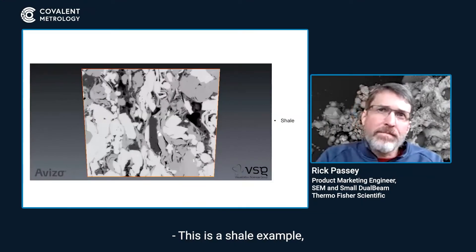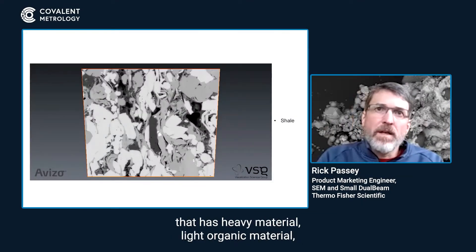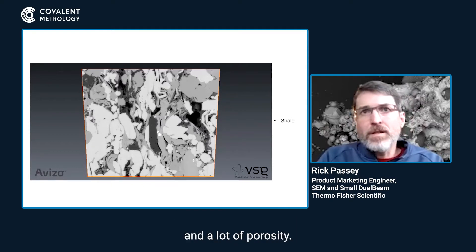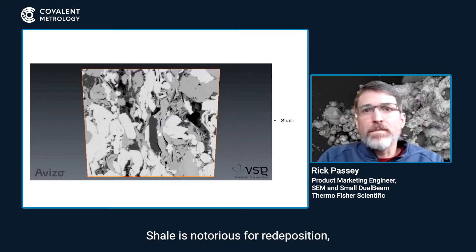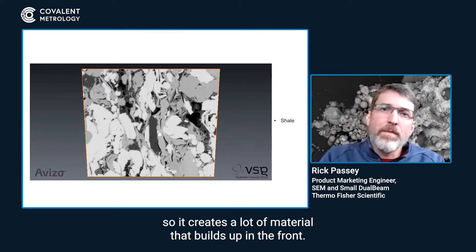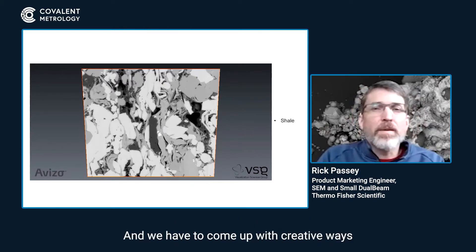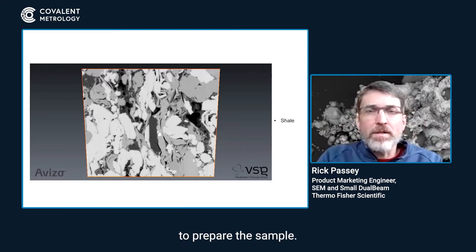This is a shale example. This is one of those complicated samples that has heavy material, light organic material, and a lot of porosity. Shale is notorious for redeposition, so it creates a lot of material that builds up in the front, and we have to come up with creative ways to prepare the sample.